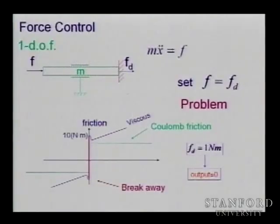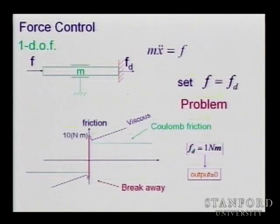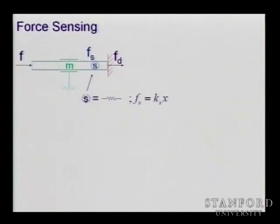You cannot do it in open loop — you need to measure the resulting force at the output. If you apply one Newton, the output will be zero. You need to measure the actual force F, form an error between your desired one Newton and the actual force, and then you can do feedback control.